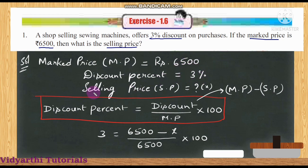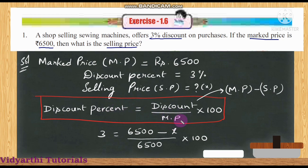The selling price is what we need to find, so let's call it x. The discount percentage formula is: discount percentage = (discount ÷ market price) × 100.